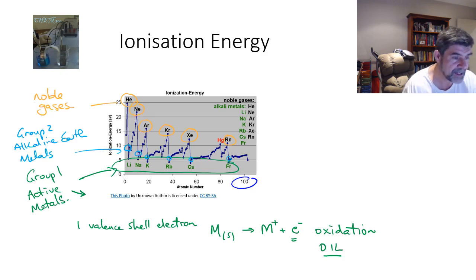These are things like calcium and barium and magnesium. Each of these particular metals also shows a fairly low value for the ionisation energy. And in each of these cases, there would be two valence shell electrons.